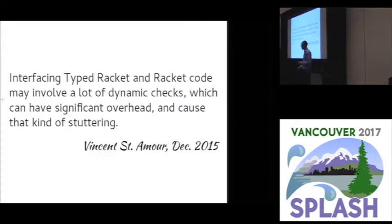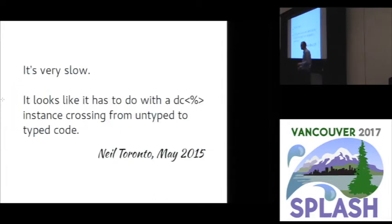So here's a quote from actually someone who I've worked with a lot, developing typed rackets. Interfacing typed rackets and rackets code may involve a lot of dynamic checks, which can have significant overhead and causes that kind of stuttering. This is a person whose GUI application was not doing the right thing because it was too slow. Here's maybe the person who's written the most code in typed rackets of anyone, even more than I have. It's very slow, referring to an application that they had built that's causing slowdowns because of values going back and forth between the typed and the untyped part of the program.